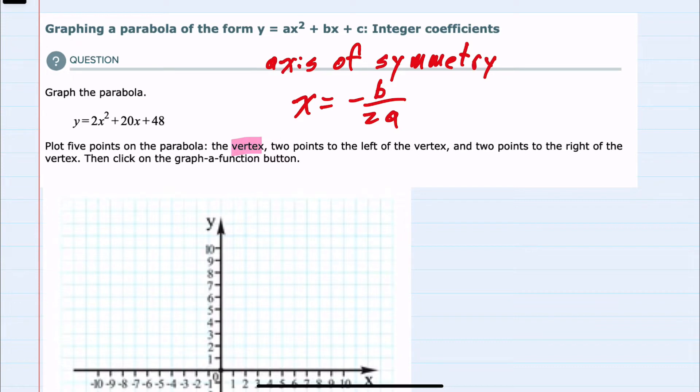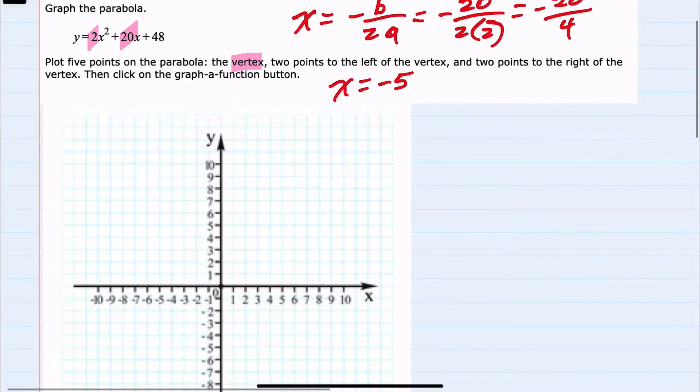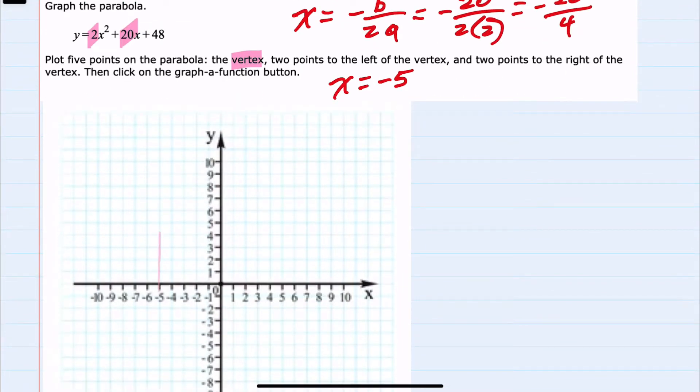From the standard form we're going to be plugging in a and b. Here those values are 2 and 20. So if we replace our b with 20 and our a with 2, we would have negative 20 over 4. So our axis of symmetry is x equals negative 5. We know that our parabola will be symmetric across this line, so we're going to be plugging in values here.